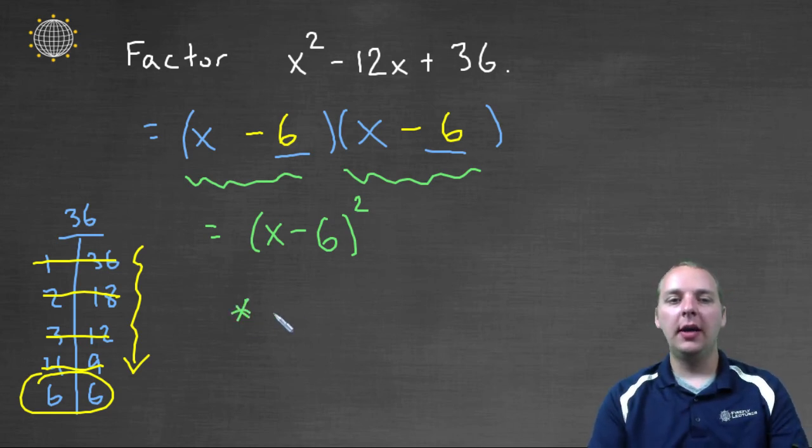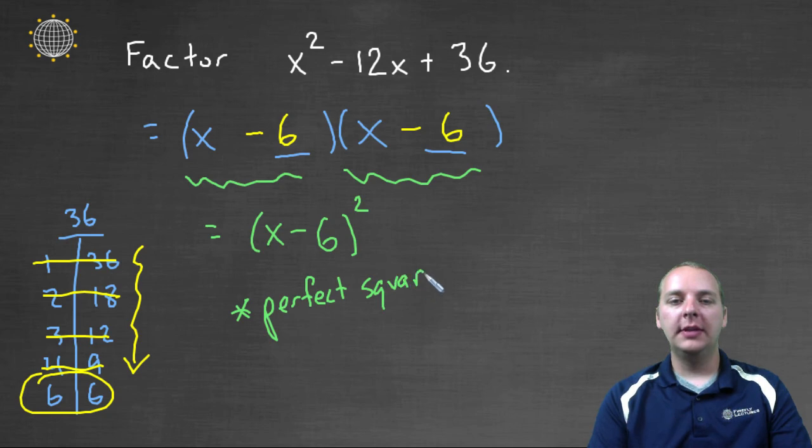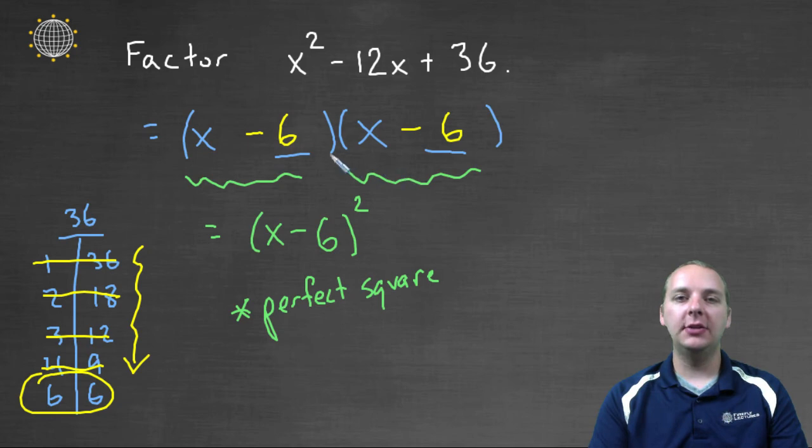And so this is what we call a perfect square, because it gives you a quantity that's perfectly squared. When you have that situation where both factors are the same, you should write it as something squared.